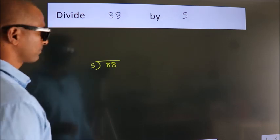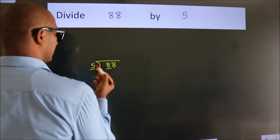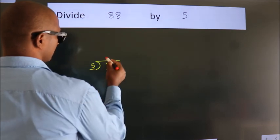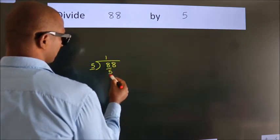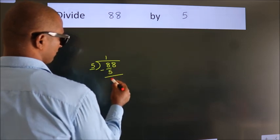Next, here we have 8, here 5. A number close to 8 in the 5 table is 5 once 5. Now we subtract and get 3.